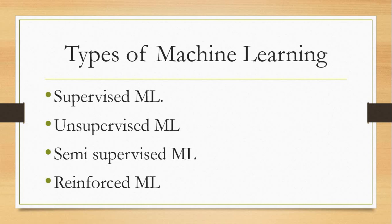Reinforced learning algorithms operate similarly to how robots and humans learn. For example, a child touches something hot and learns not to touch it again, or tastes something sweet and wants more. The model learns by trial — when it performs well, it is given a reward; when it doesn't perform well, it is punished so it doesn't repeat the same mistake. That's how reinforced learning works.